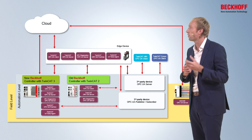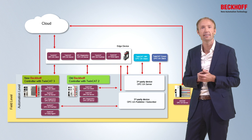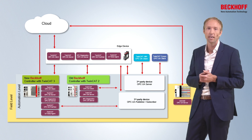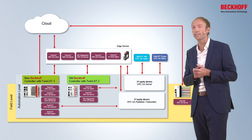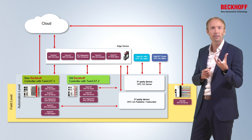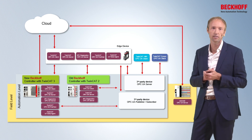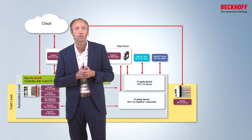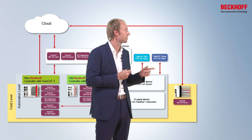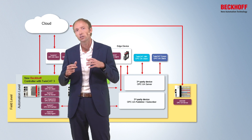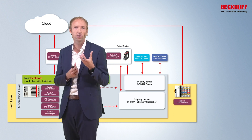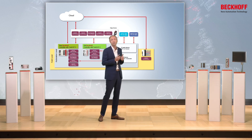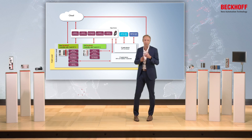With TwinCAT HMI, we have our own HTML5-based web visualization. This TwinCAT HMI system comes with an integrated OPC UA client to access remote servers and visualize their data values. We also have TwinCAT Scope, which has an integrated OPC UA client to connect to third-party devices for charting and diagnostics. On the field level, we introduced a bus coupler with an integrated OPC UA server for easy, secure, and standardized access to I/O data points. And finally, we have products that allow connectivity with the cloud based on OPC UA PubSub, for example via MQTT.